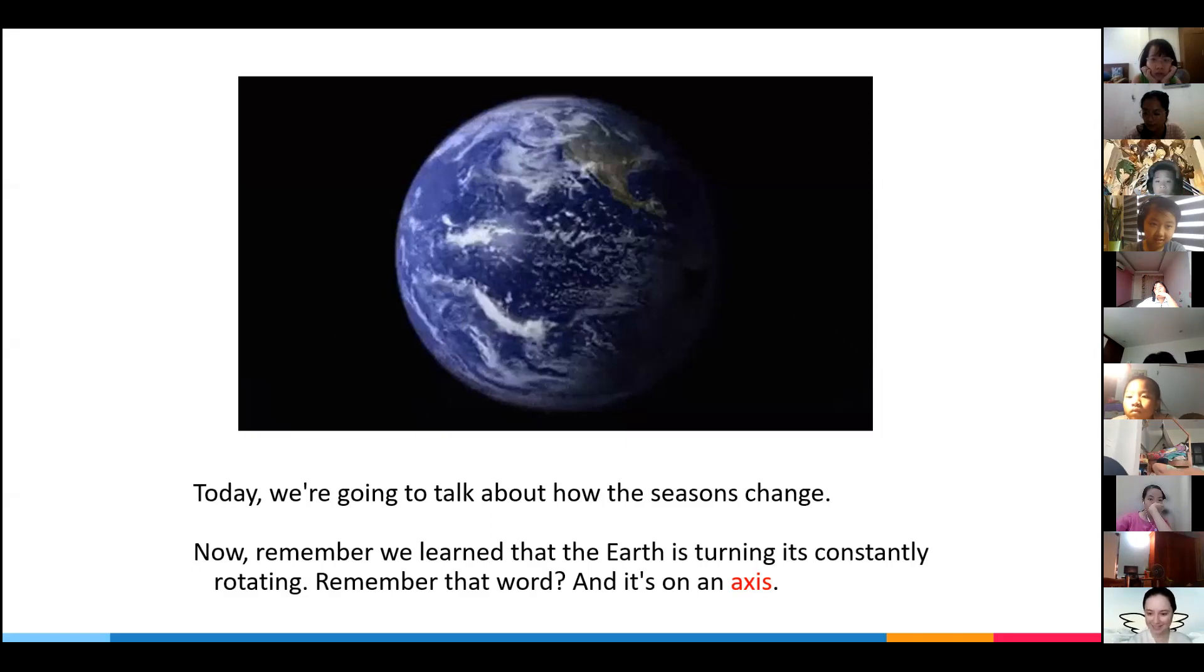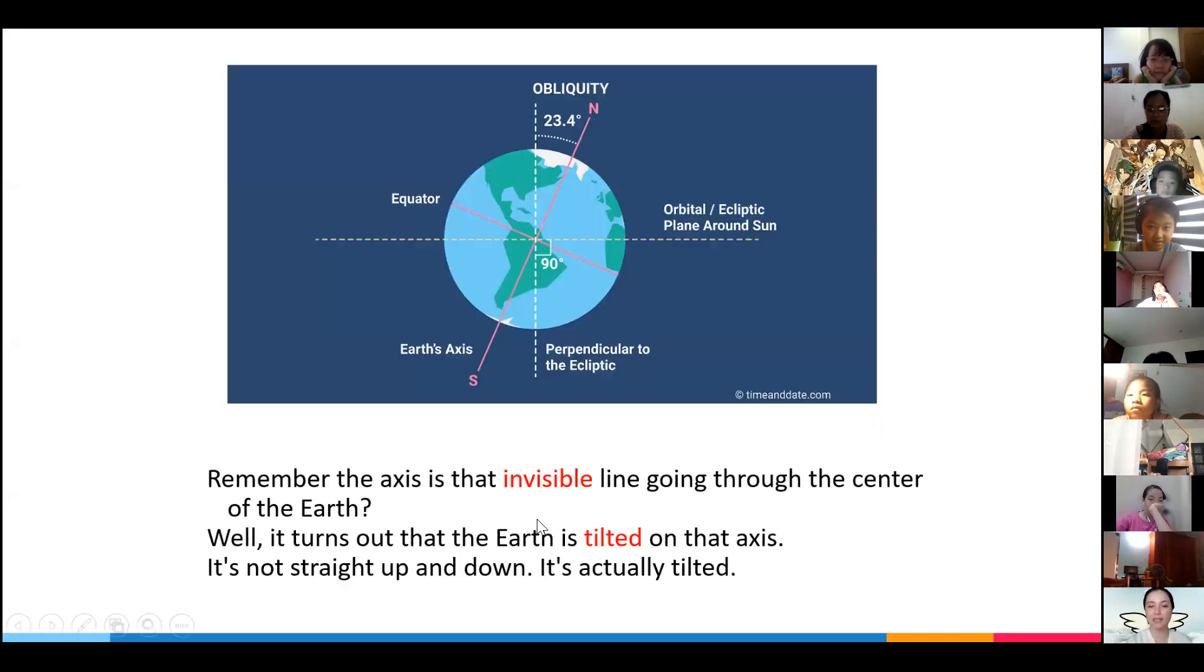Our planet is rotating on its axis. When we talk about axis, it is the invisible line. There's no line, it's invisible. What does invisible mean? Do you know what invisible means, Ruby?